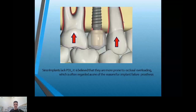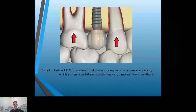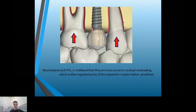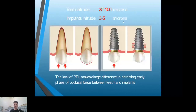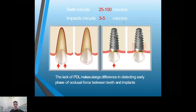The main difference between the tooth and the implant is the periodontal ligament. The implant has no periodontal ligament and no flexibility, while the tooth has the periodontal ligament, which gives some flexibility on movement in the bone under masticatory forces. The tooth can intrude in the bone about 25 to 100 microns when force is applied, while the implant can intrude only about 3 to 5 microns.